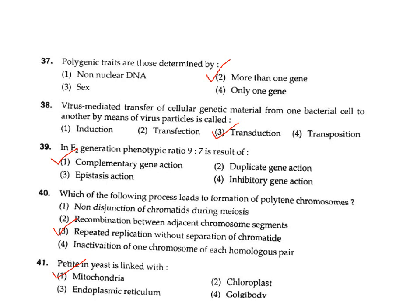Question 38: Virus-mediated transfer of cellular genetic material from one bacterial cell to another by means of a virus particle is called what? The recombination that occurs in bacteria through viruses is called transduction. Correct answer Option 3.